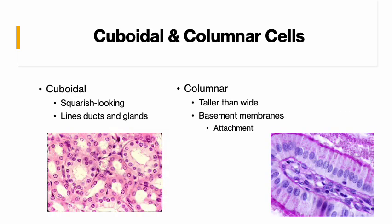The cuboidal ones are the square-looking cells, usually found in ducts and glands. Looking at a picture, the big circle with the white in the middle is not one cell — that's like 20 cells. The little purple dots are the nuclei, and you can see there's a box around each one — that is the cell, and that's why it's cuboidal, because it's very square. These cells are making a duct or a gland, and they happen to form a circle when you put a bunch of them together.